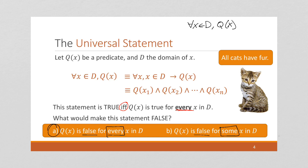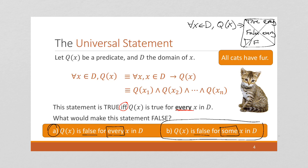But saying it's true for every element, with the opposite being false for every element, would leave a third option: true for some and false for some. There can't be three options — there are only two. So the opposite of 'it's true for everything' is actually that it's false for some. 'Some' could be all, but we're leaving it open — it could be false for some or all of them; it's just not true for all of them.